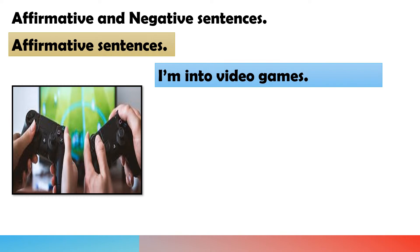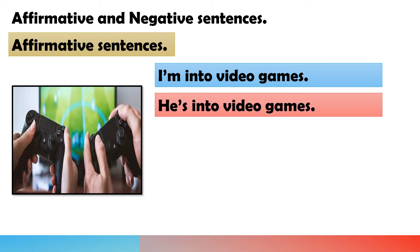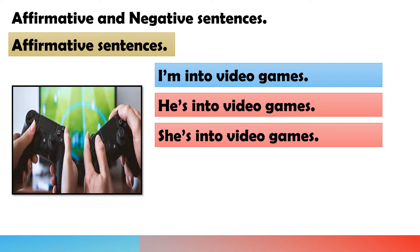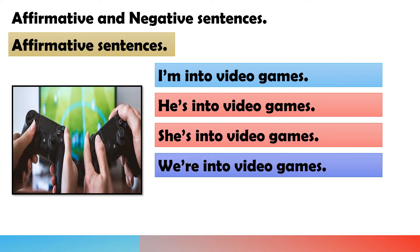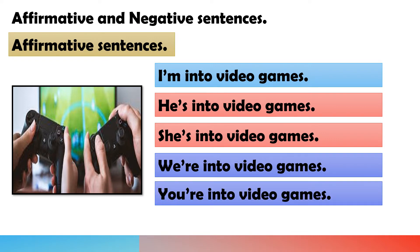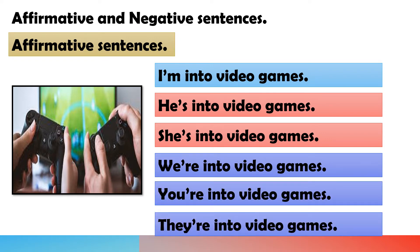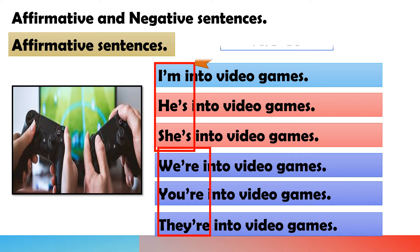These are verb 'be' affirmative sentences with hobbies: I am into video games. He is into video games. She is into video games. We are into video games. You're into video games. They're into video games.